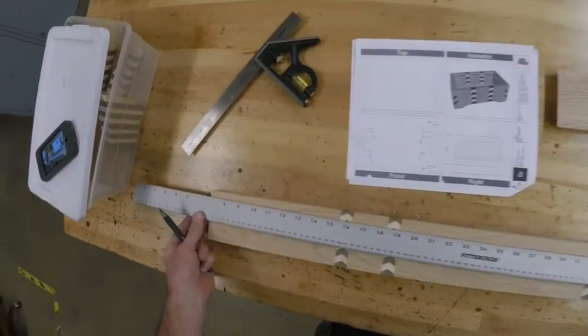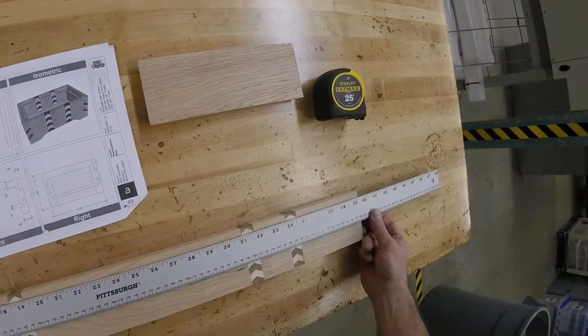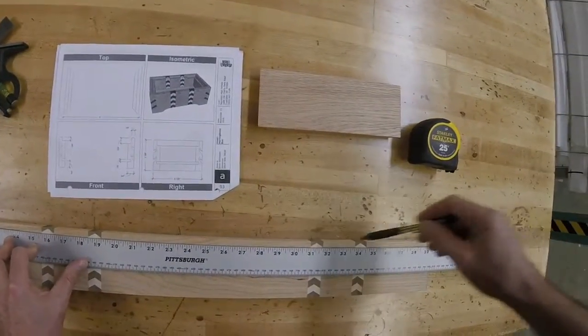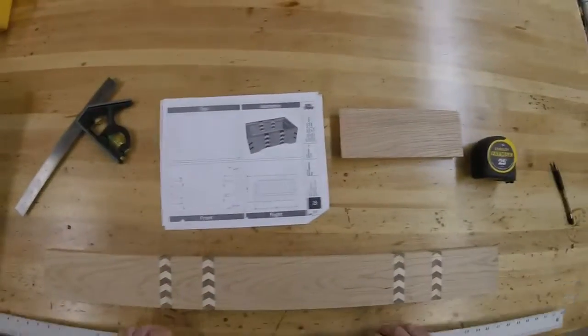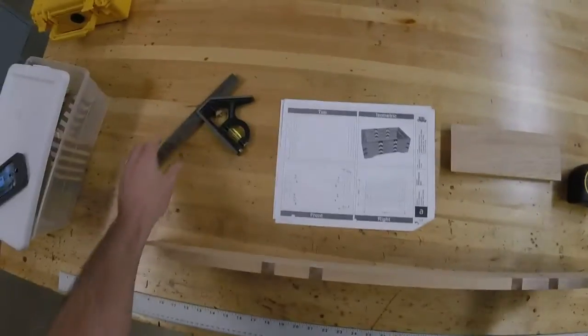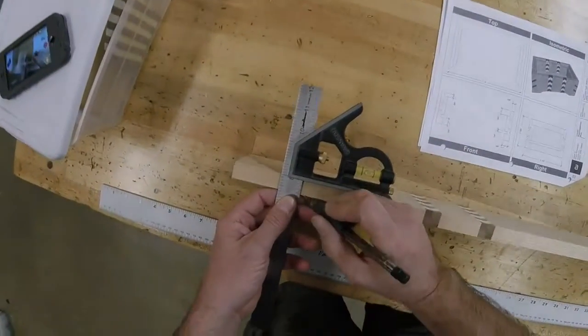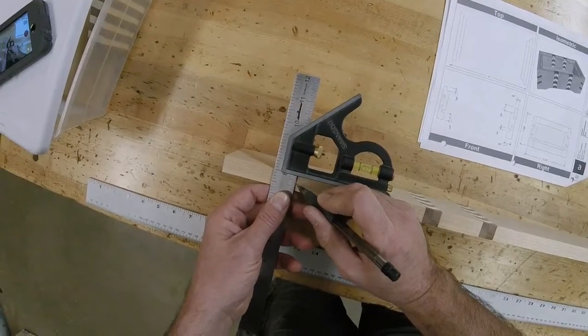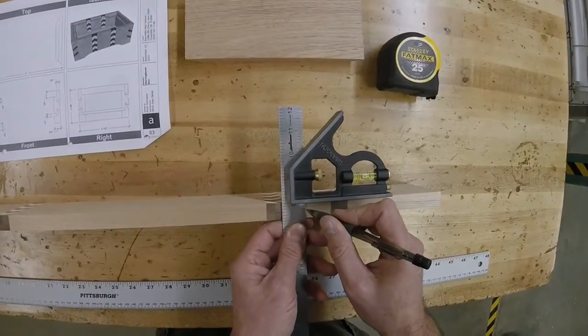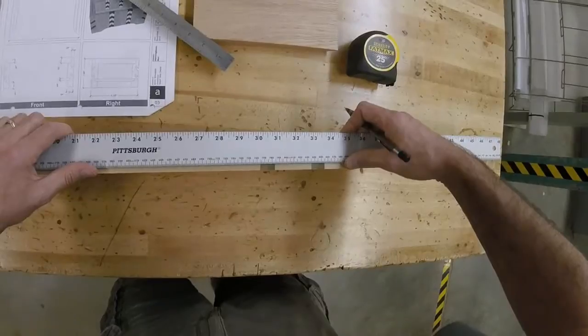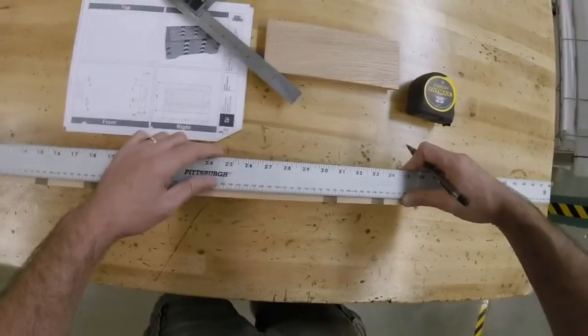Alright I have my Harbor Freight straight edge here, line that up on my two lines. That's where the rabbet will be. Okay, we also want to expose 3 eighths of an inch showing, so I'm going to do the same thing here: one, two, 3 eighths; one, two, 3 eighths.